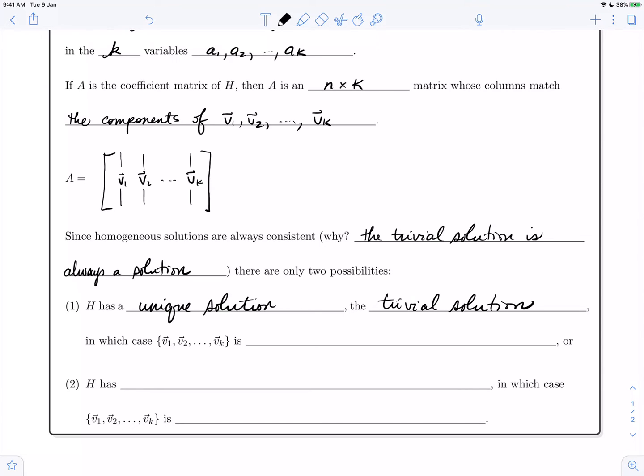In this case, the set v1 through vk is linearly independent. The other possibility for number of solutions for a homogeneous system is H has infinitely many.